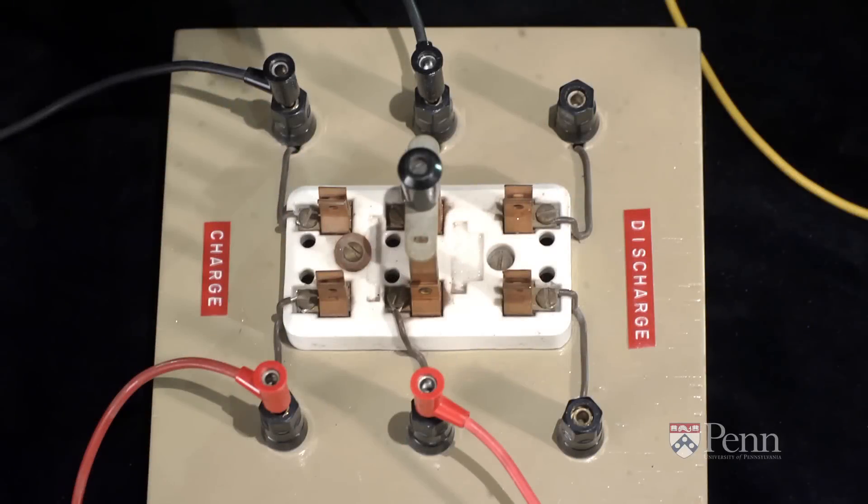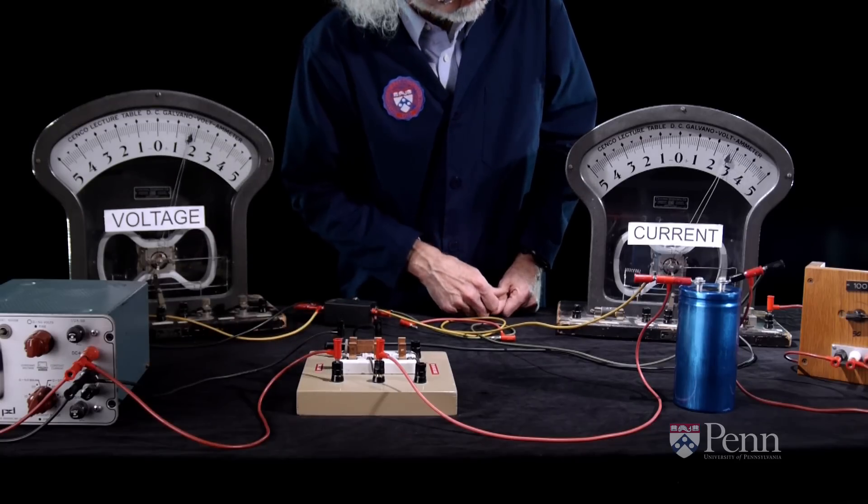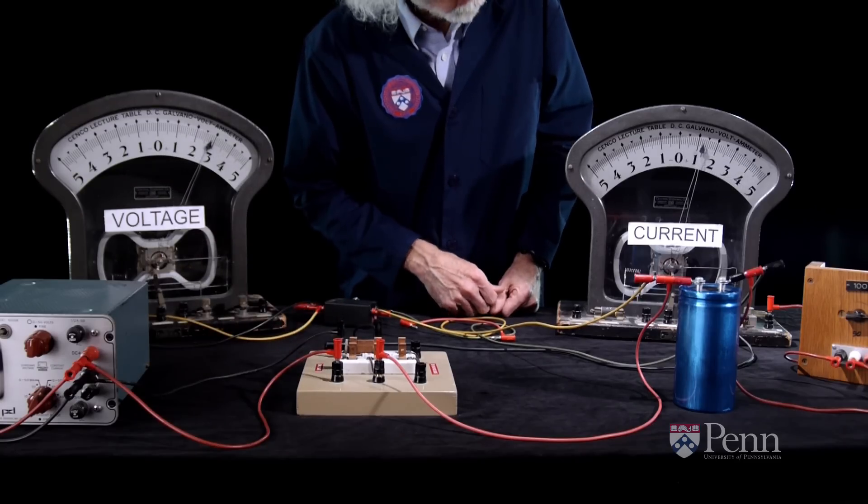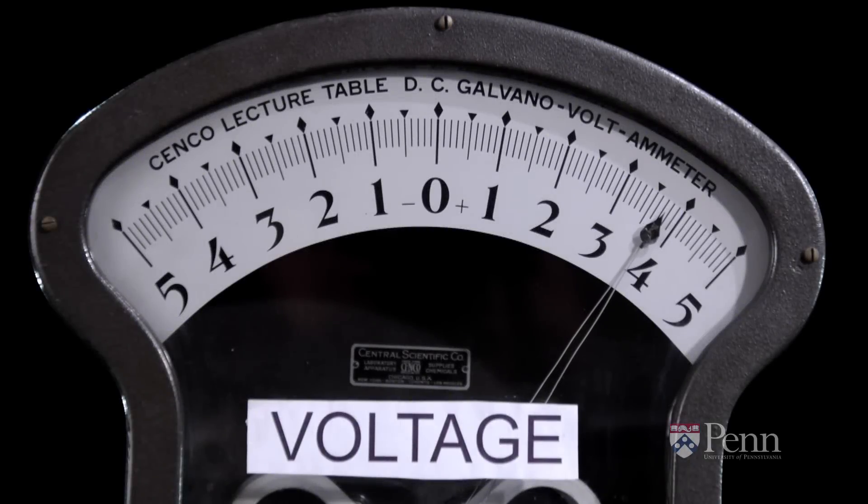When we throw the knife switch to the left, the electricity flows through the circuit. Notice the two meters. The voltmeter rises and holds its value.